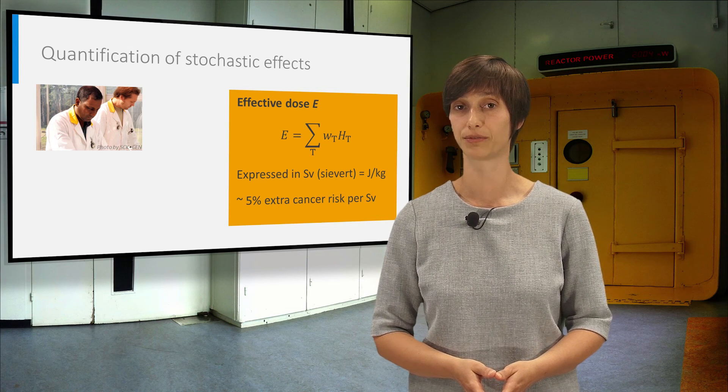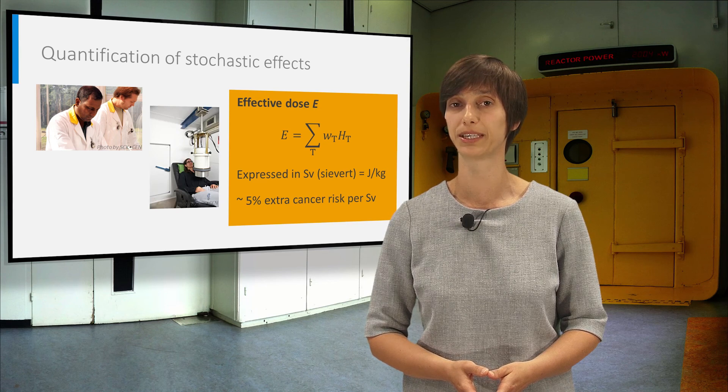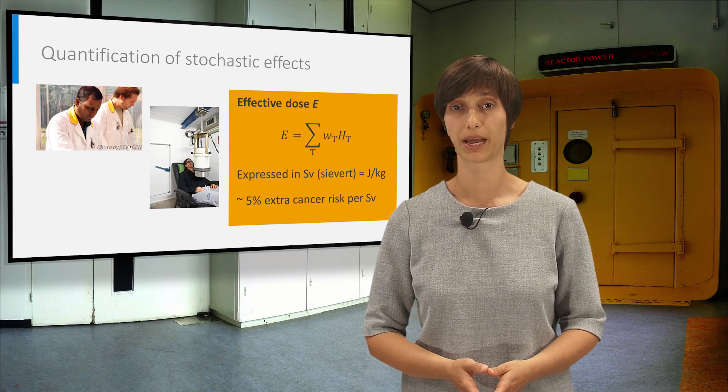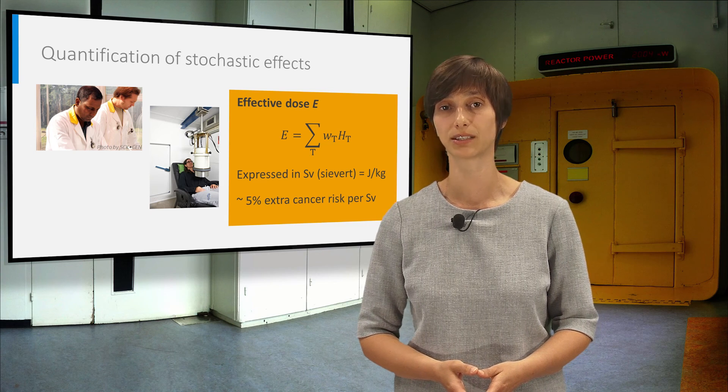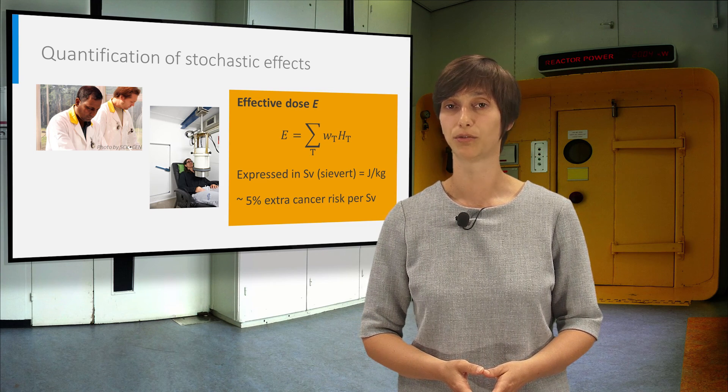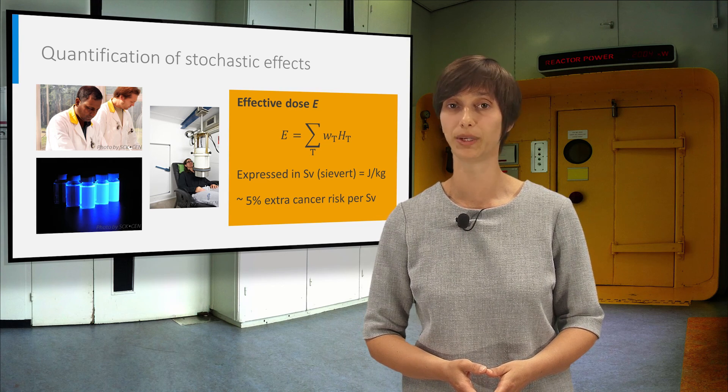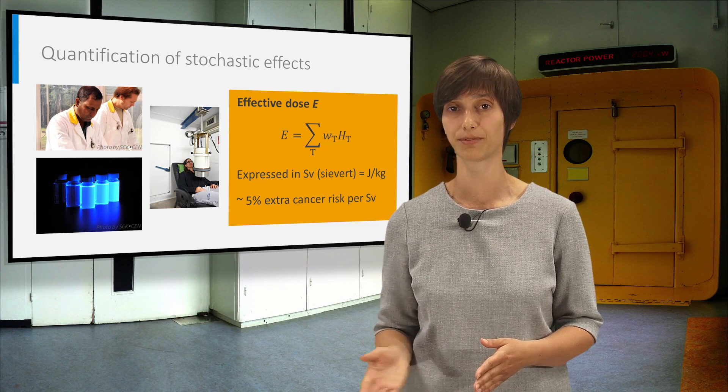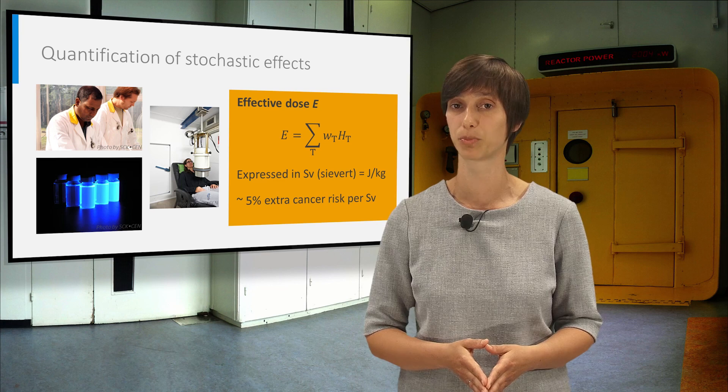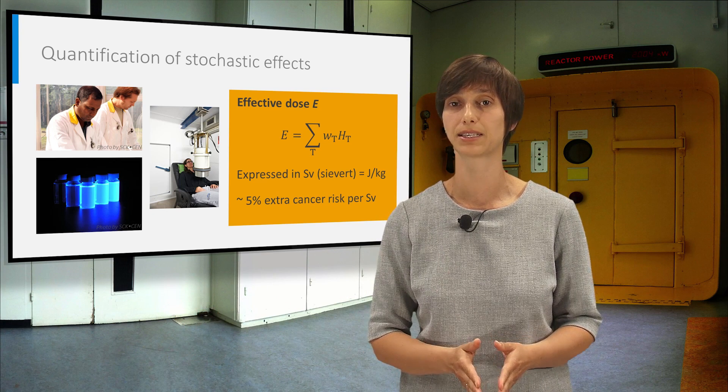Workers at risk of internal contamination with radionuclides also have to be monitored for internal radiation exposure. For gamma emitters, this is done by measurement of the worker with an external detector close to the body. For pure alpha and beta emitters, this is done by dissolving urine samples in scintillation liquid. Such measurements allow calculating the committed effective dose to which the worker will be exposed over the course of his life due to incorporation of radionuclides in his body.